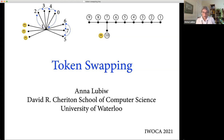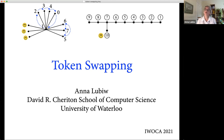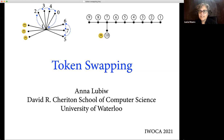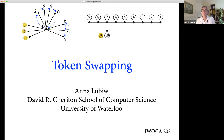That distinction will arise during this talk. I wanted to point out these two lovely surveys on reconfiguration problems — one by Vanden Heuvel and one by Naomi Nishimura, who is my colleague at Waterloo. Both of them start with the 15 puzzle as the motivating example.